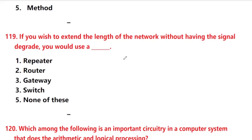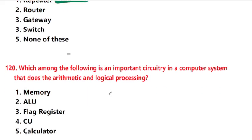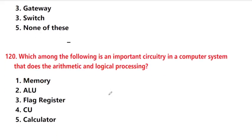If you wish to extend the length of a network without having the signal degrade, you would use — option 1: a repeater. Next: which among the following is an important circuitry in a computer that does arithmetic and logical processing?